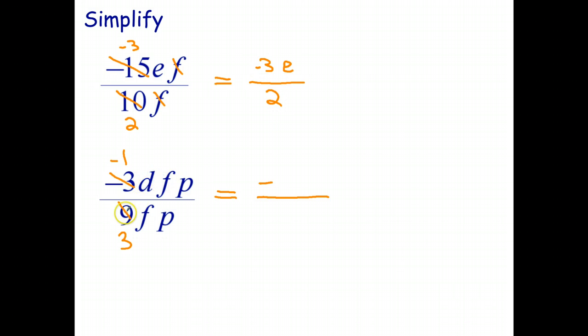There's a d in the numerator. There's no d in the denominator. So the d just stays. I've got common factors, and I should have put the 3 on the bottom. There are common factors of f, so they divide out. And there are common factors of p, so they divide out. And that's our final answer. So negative 3 on 9, simplified to negative 1 third, and we don't write the 1. The d stays, and the f's cancel out or divide out, and the p's cancel out or divide out.